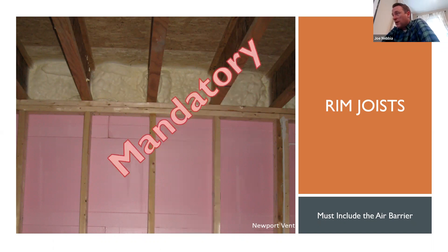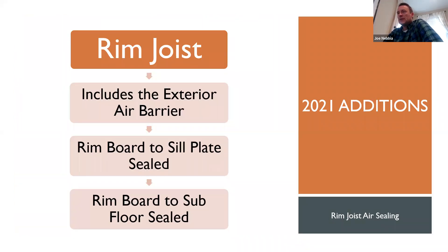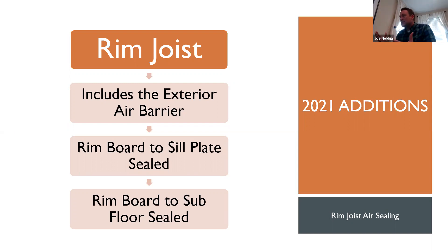It doesn't have to be spray foam as in the example. The air barrier could be the rim joist itself as long as all the seams are sealed. 2021 adds some new details to the rim joist requirement. It includes the exterior air barrier, and the rim board and the sill plate junction have to be sealed, as well as the rim board to the floor subfloor. This is how you would seal it anyway, but it gives specific details on how to seal that assembly.